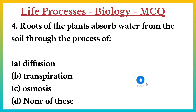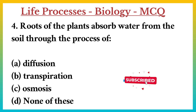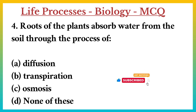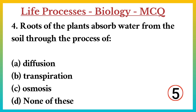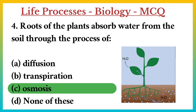Question number 4. Roots of the plants absorb water from the soil through the process of? A. Diffusion. B. Transpiration. C. Osmosis. D. None of these. Answer: C. Osmosis.